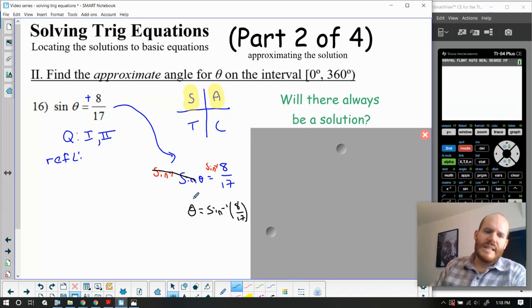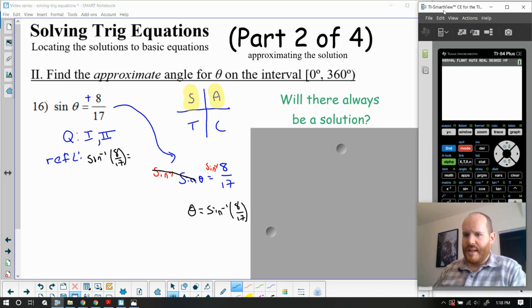The only problem here is that this gives me, because it's a function, only one answer, but I know I'm looking for two. So I'm going to have to interpret this value. This sine inverse is really just going to give me the first quadrant or the reference angle. So the reference angle is going to be whatever sine inverse of 8/17ths is, and I can use the calculator to help me identify that value.